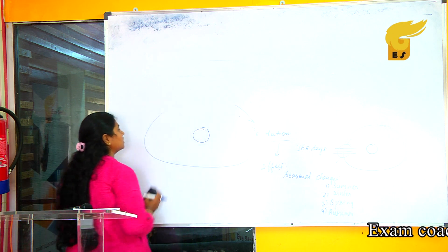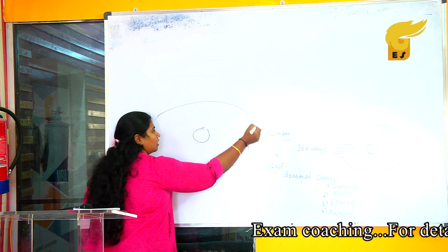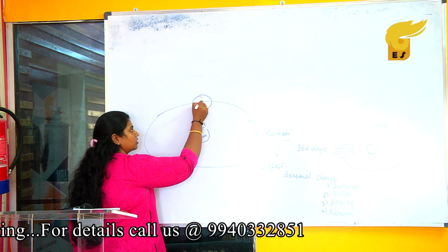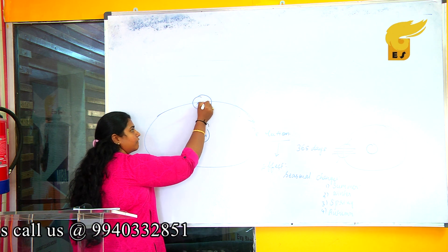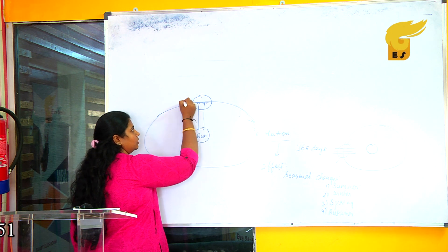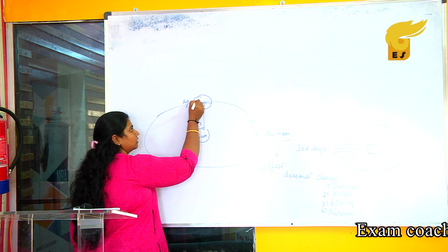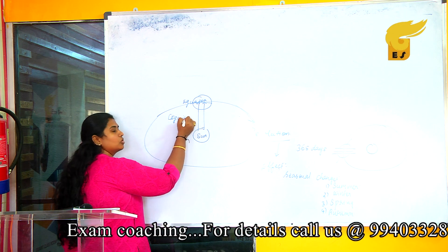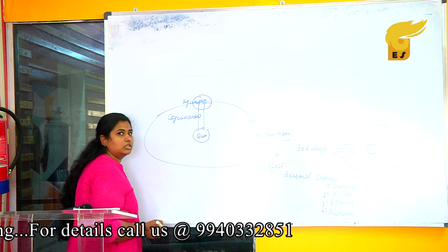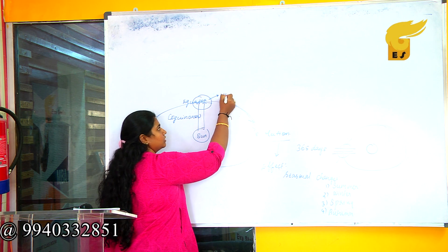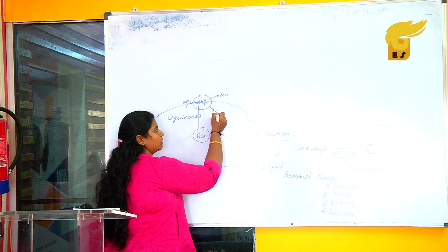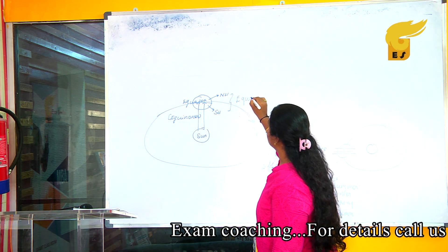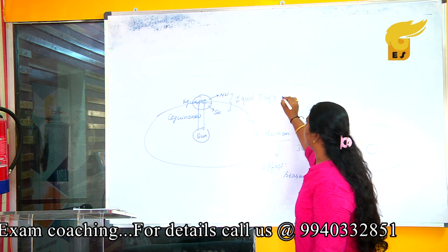The first stage is when your Earth is placed in this position and the Sun radiation falls directly on the equator. You call this situation as equinoxis, which means both Northern Hemisphere and Southern Hemisphere will have equal day and night.